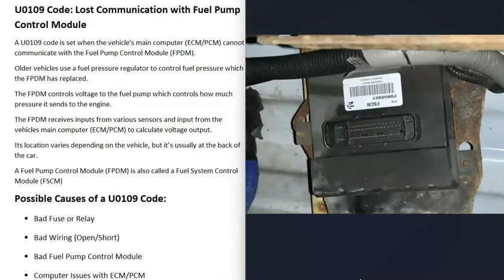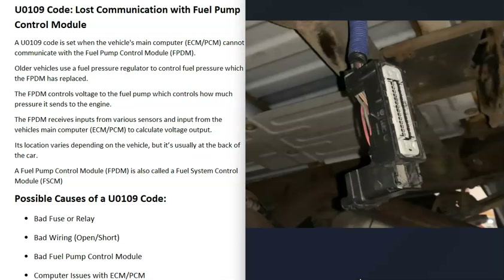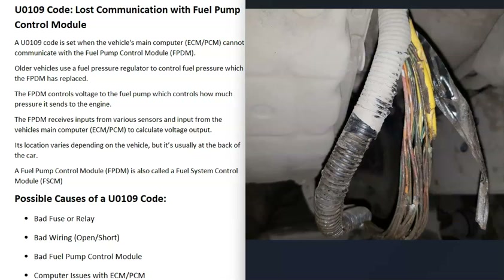The next possible cause is a wiring issue going to the fuel pump control module. If there's any open, short, or bad connection in there, that's going to cause problems. You can check out the wiring harness going to that control module, along with all the other wires that run around the engine and to the other control modules. Check to see if you see any physical damage — sometimes small rodents get in there and chew on wires and cause problems.